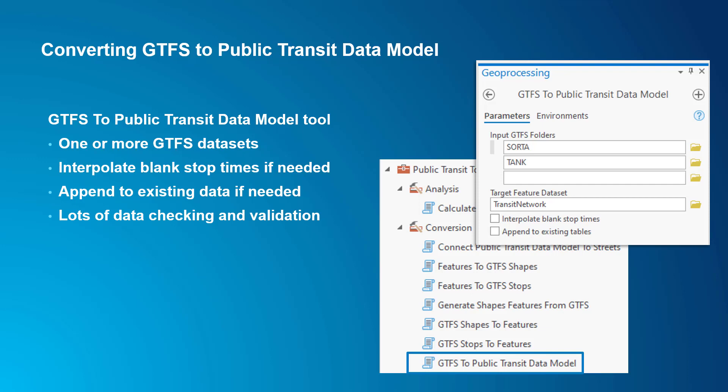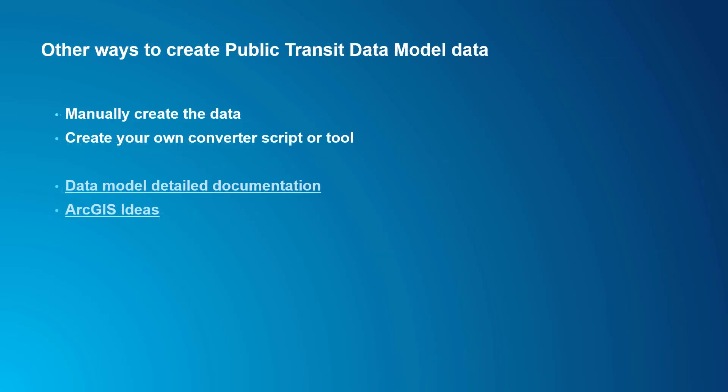If your dataset has blank values for arrival time and departure time in the stop_times.txt file, the tool can interpolate arrival and departure times from the surrounding time points if you check on the interpolate blank stop times option. This tool creates everything except the stops on streets and stop connectors feature classes in the data model. You can create those with the connect public transit data model to streets tool, which I'll talk about in a later video. You don't necessarily have to start from GTFS data, although this is definitely the easiest way since we've provided a tool for you. But you could manually create the feature classes and tables, or you could create your own converter script or tool from your own data model or some other standard.